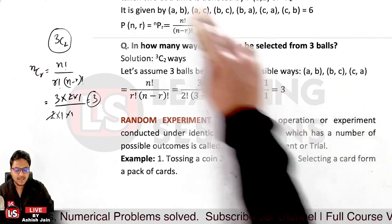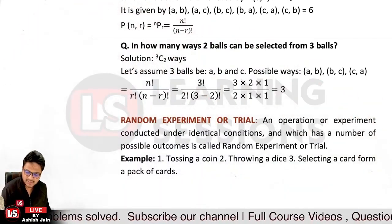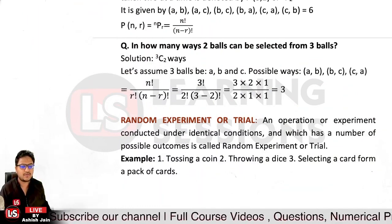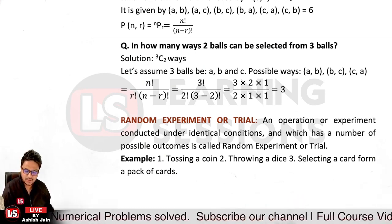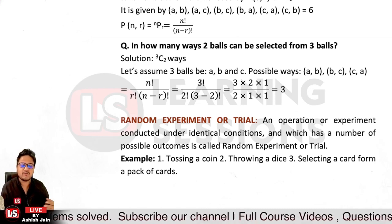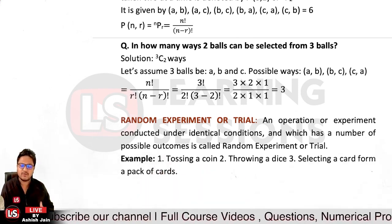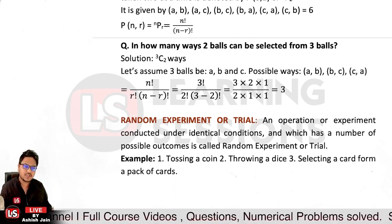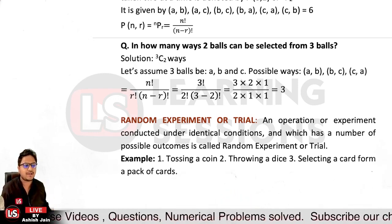Now let's learn about random experiments or trials. When you conduct an experiment under identical conditions and you know the possible outcomes, that is a random experiment or trial. For example, tossing a coin — we know it will be either head or tail. Rolling a dice — we know we will get a number from 1 to 6 only.